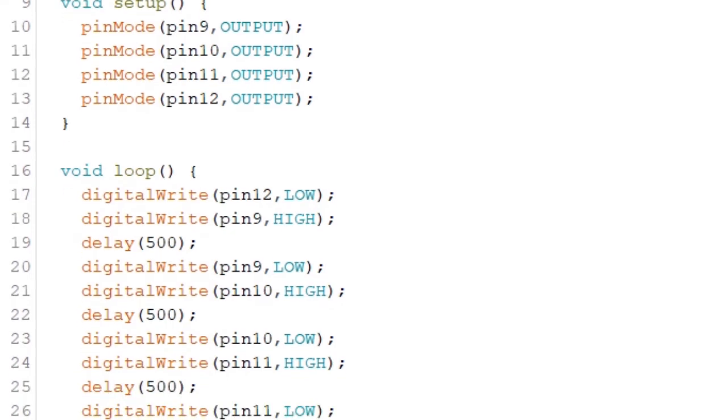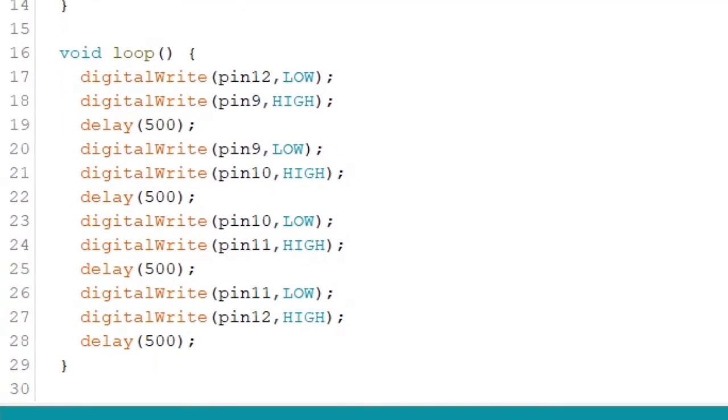In the first line, we turn off the last LED in the series by writing a low setting for pin 12. And at the same time, we turn on the first LED in the series by writing a high setting for pin 9. To make the effect run faster, we simply write 500 milliseconds or half a second in the delay function before turning on the next LED in the series.